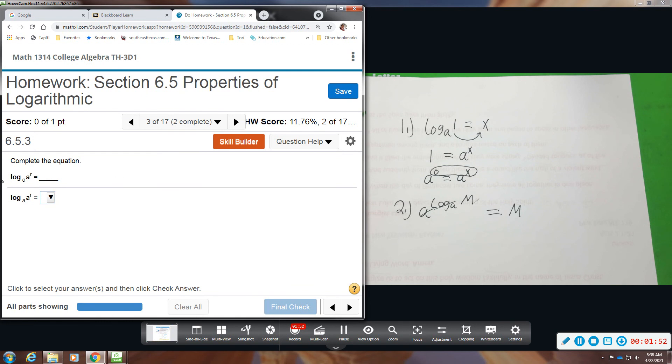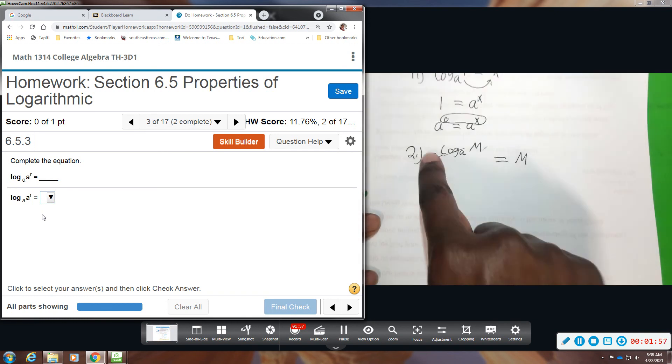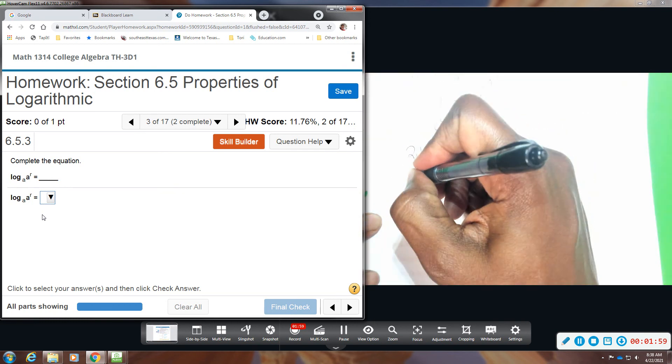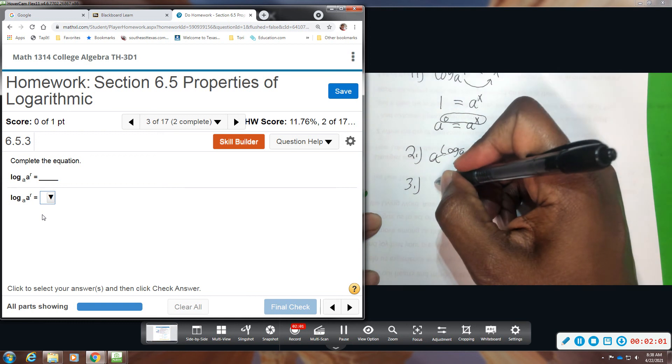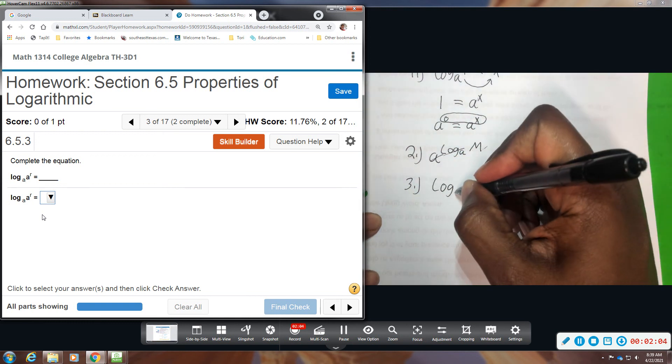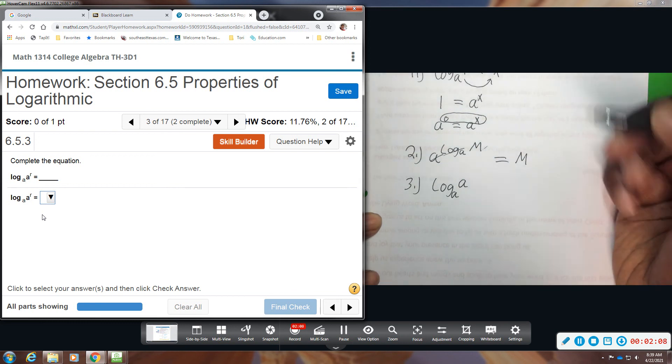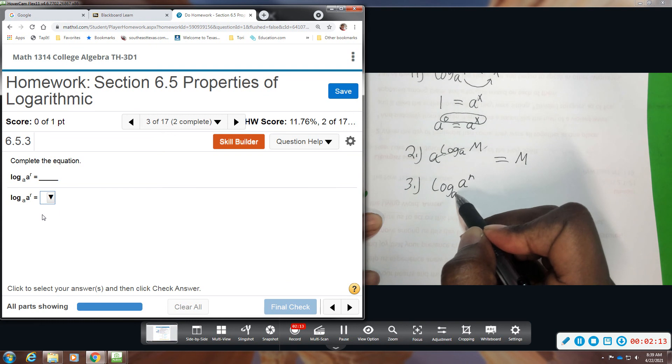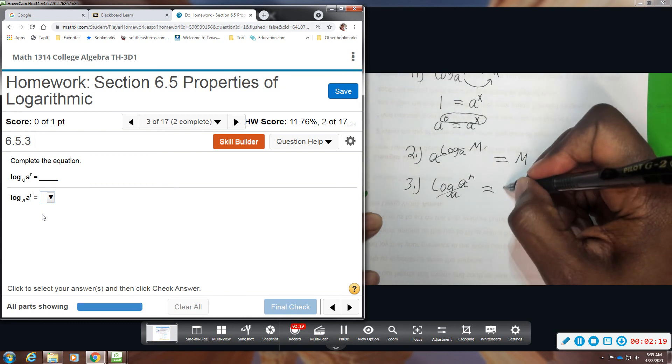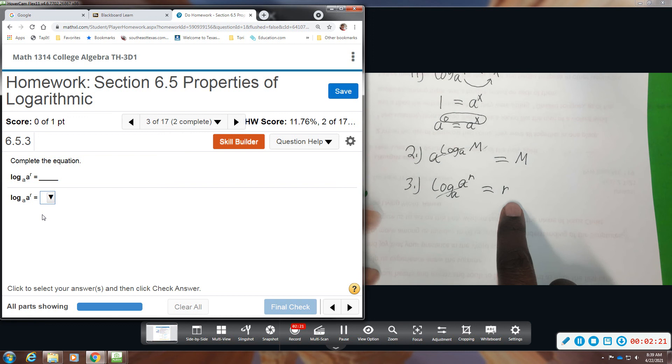Number three is almost the same property but they just have it in different forms. This was exponential form and the other one, number three, is in log form. We have log base a and we're taking the log of a to the power of r. Again, this base a log and a here cancel each other out, and you're just left with r. That's the property there that they want you to be familiar with.